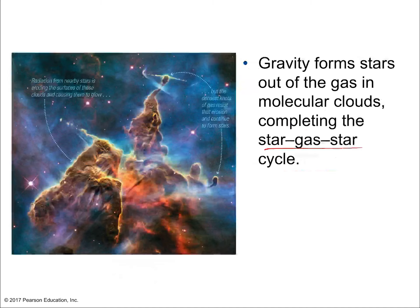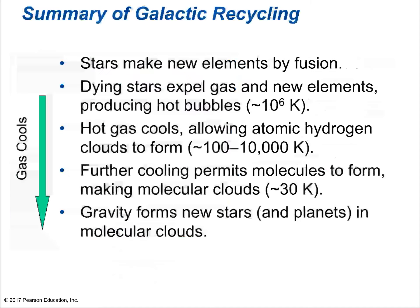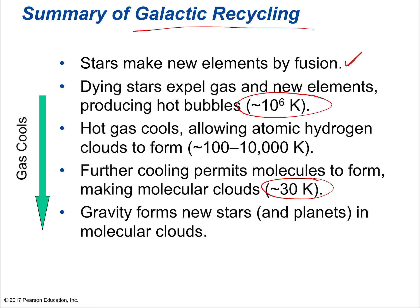The star-gas-star cycle is made possible by the proximity of stars to each other within the galaxy, and the movement of dust pushed around by gravitational effects of hundreds of billions of stars swirling in the disk. Radiation from newly formed stars erodes star-forming clouds, leaving the formed stars within. In summary: stars make new elements by fusion; dying stars expel gas and new elements producing hot bubbles at about a million kelvin; the hot gas cools allowing atomic hydrogen clouds to form at 100 to 10,000 kelvin; further cooling permits molecular clouds as cool as 30 kelvin; then gravity forms new stars and planets.